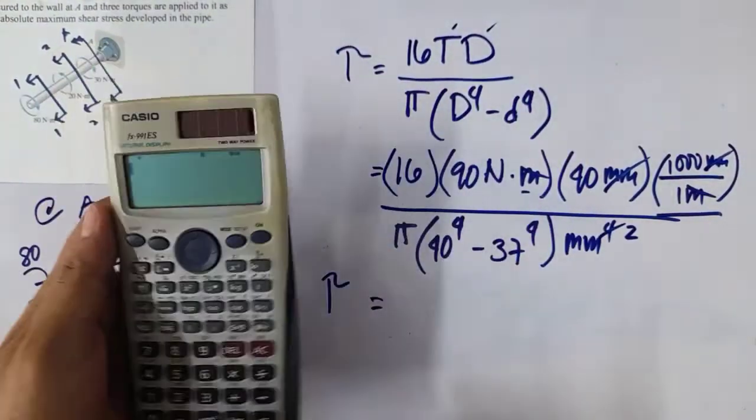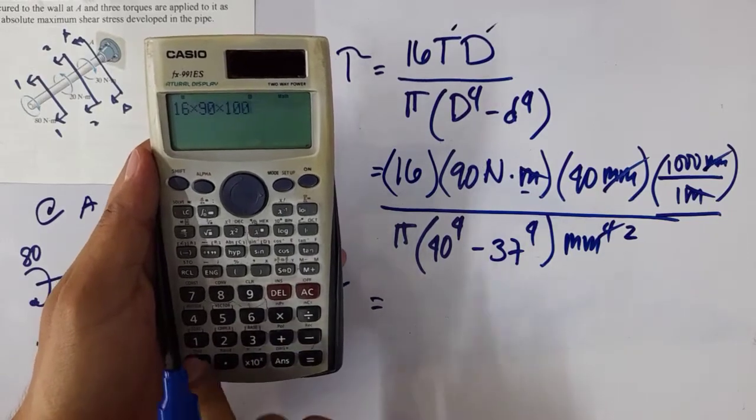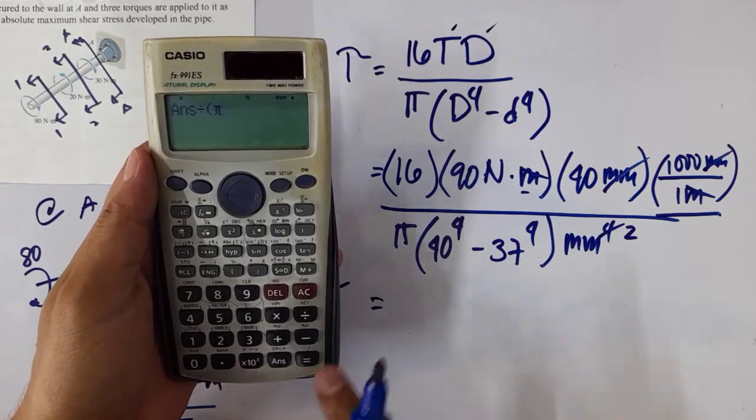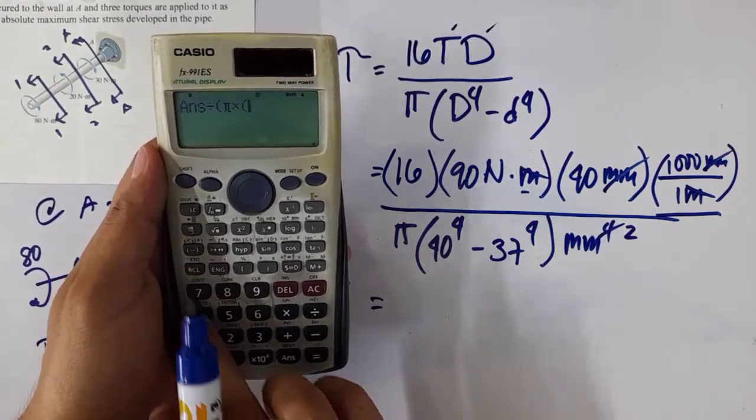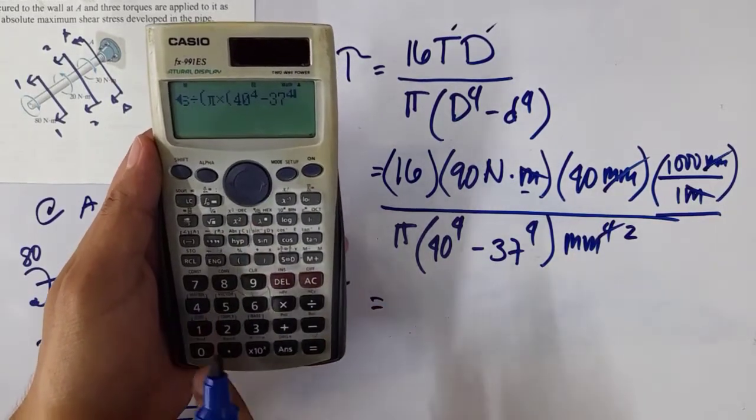So we have to plug in 16 times 90 times 1000, divided by π times 40 raised to the 4, minus 37 raised to the 4.